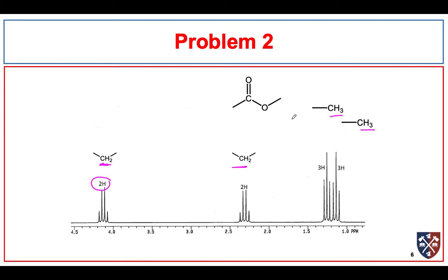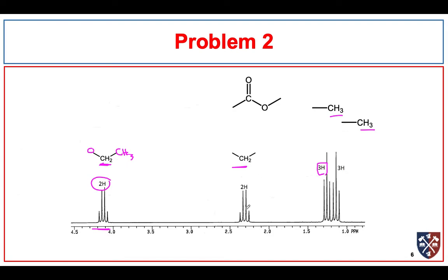All we have to do is hook these up. This CH2 group out at 4 ppm is a quartet, so it's bonded to an oxygen on one side and a CH3 on the other — that solves one side of our ester, giving us an ethyl group. On the other side, we also have a quartet-triplet pattern for an ethyl group. So the compound responsible for this spectrum is ethyl propionate.